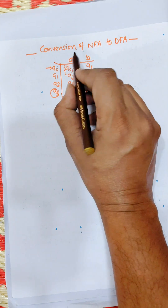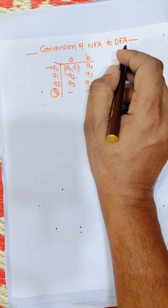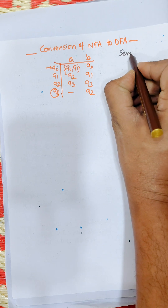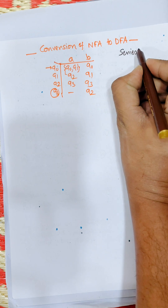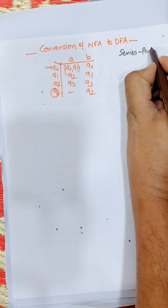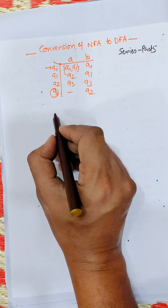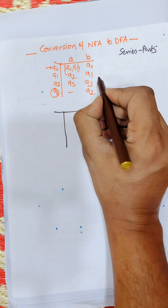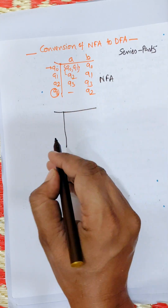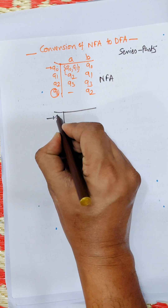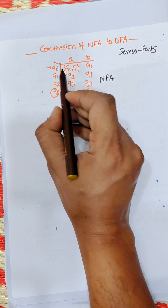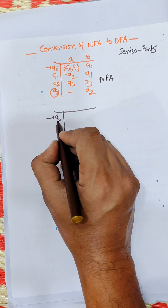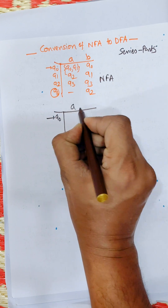Hi everybody. In this video I am going to convert NFA to DFA. This is automata series, part 5. First of all, we need to create the initial state from the NFA table. Q0 is the initial state of the NFA, so Q0 is also the initial state for the DFA.